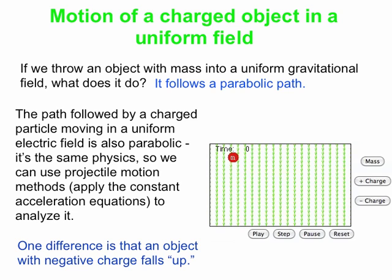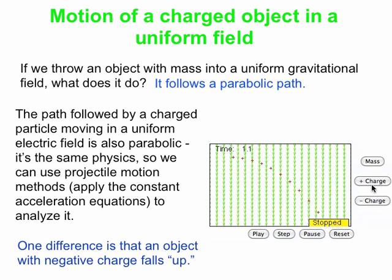Let's see this in action. First we'll take our baseball, the object with mass, and throw it into our uniform gravitational field. It follows our traditional parabolic trajectory. Then we'll switch over to a positive charge — in this case we've given it exactly the same acceleration as the baseball, so the path is the same. And then here's our negative charge, which falls up. But the physics is all the same. All that projectile motion stuff we've learned about previously, we can now apply to situations of charges moving in constant, uniform electric fields.